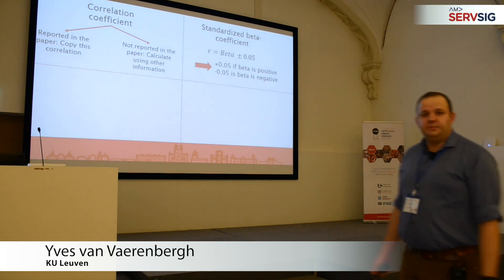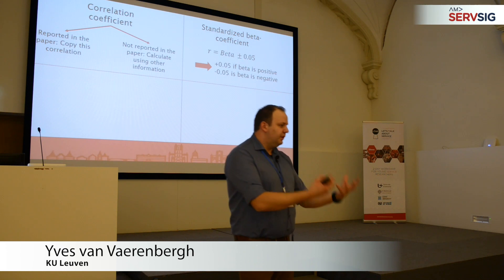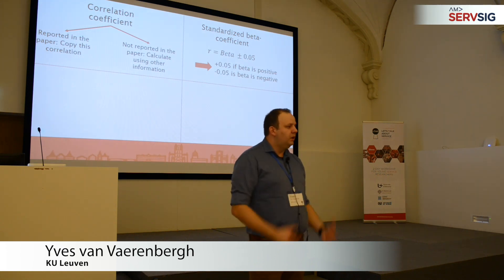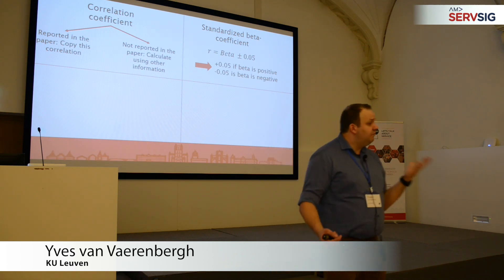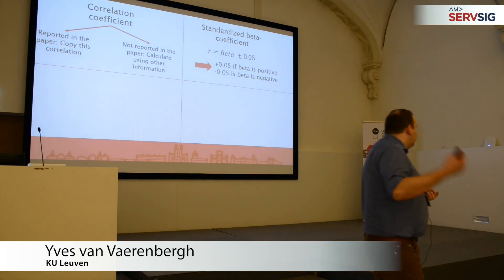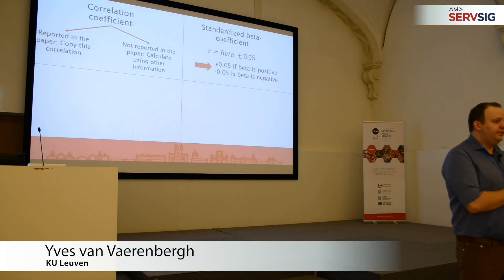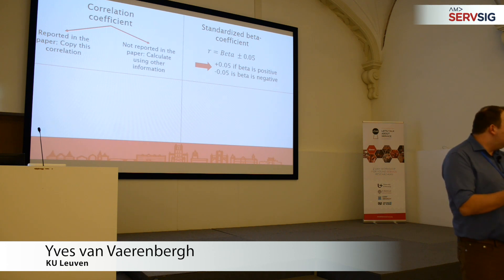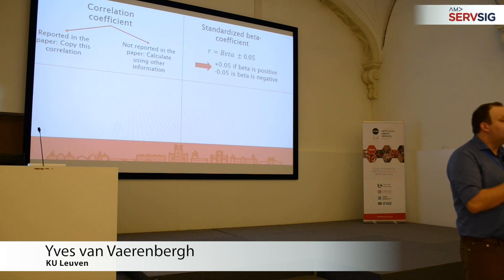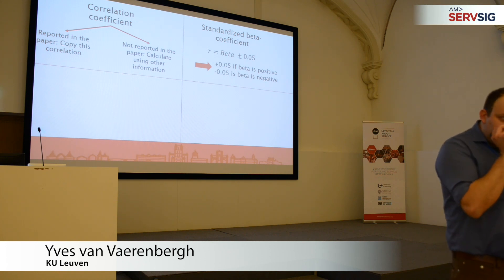For example, a standardized beta coefficient — a regression result or a coefficient in a SEM model. There are some simulation studies that actually show that adding or subtracting 0.05 comes close to the correlation. So if you observe a beta coefficient, if it's positive, you add 0.05; if it's negative, you subtract 0.05. That's a close approximation of the correlation coefficient. It's not a perfect conversion, but it's an approximation.